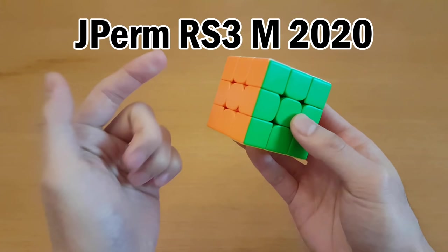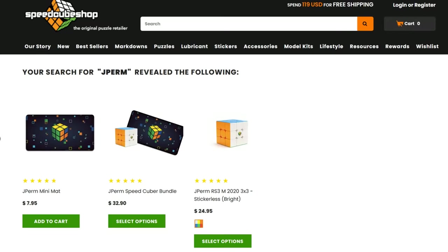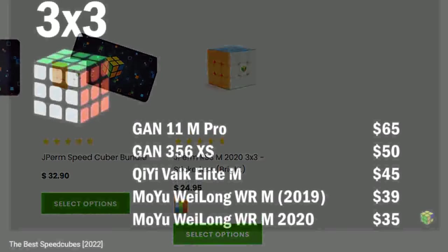Number three, get a good speed cube. The cube that I use is custom set up by speedcube shop and is linked in the description. It is $25 which is on the slightly cheaper end. There are a lot of good cubes you can get at varying price ranges and if you have any of these, then they are probably good enough.